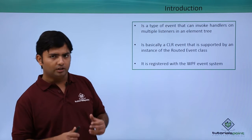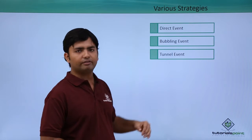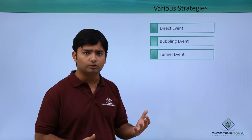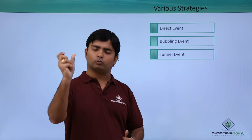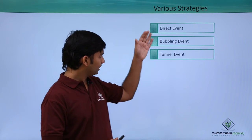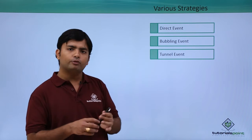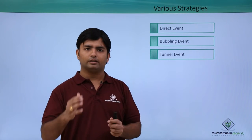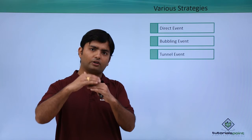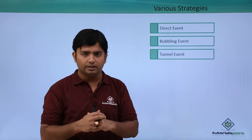In the coming videos we will look at the different kinds of event handling strategies. The first is the direct event, which is the default one — whenever any event takes place, like we used to do in WinForms. For example, if you click a button, the effect will be for that particular button only. But there are two more strategies: bubbling event and tunnel event. If you follow the visual tree, when a particular event is raised, the component responsible for raising the event routes it from the inner to the outer layer.